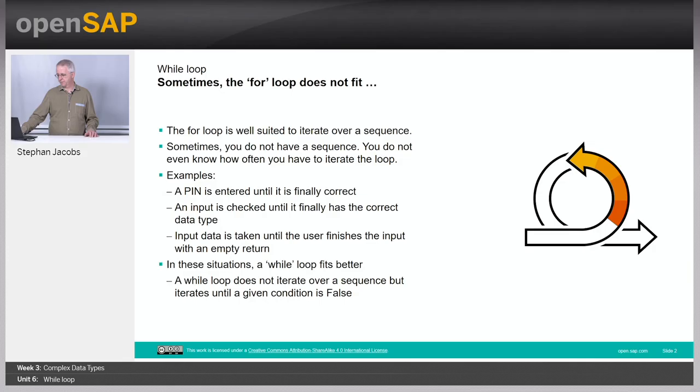Welcome to UNIQUE 6, the last one of this week. The topic is the while loop, another loop, and the question is: why do we need a second loop besides the for loop?